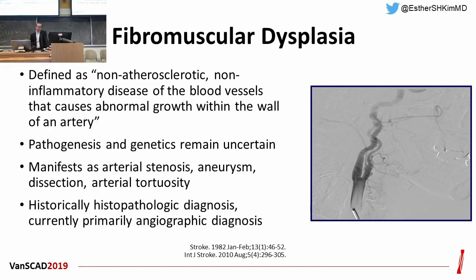Let's dive into fibromuscular dysplasia, or FMD. FMD is defined as a non-atherosclerotic, non-inflammatory disease of the blood vessels that causes abnormal growth within the wall of the artery. Pathogenesis and genetic factors remain uncertain, but FMD manifests as arterial stenosis, aneurysm, dissection, and arterial tortuosity. Historically, histopathologic diagnosis was mainstream, but currently the diagnosis is mainly done by angiography.